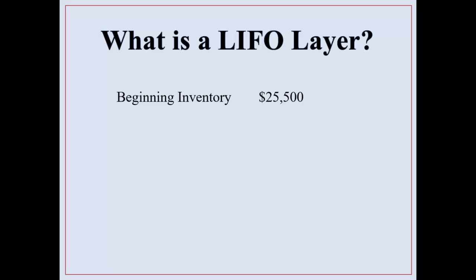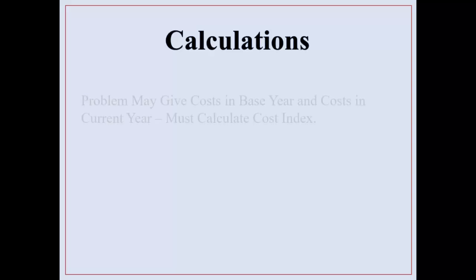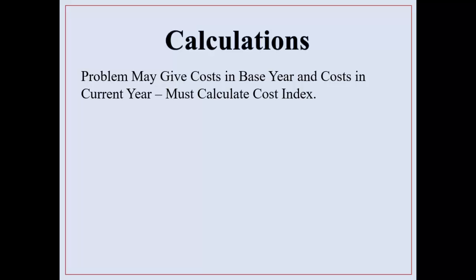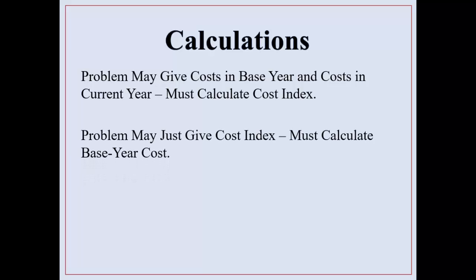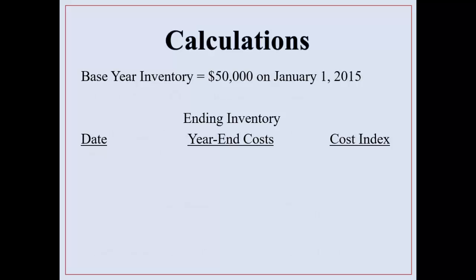So what is a LIFO layer? Beginning inventory, let's say, is $25,500. Ending inventory is $30,000. That means a new layer at new costs was added this year of $4,500 — that's a simple explanation. For your calculations, the problem may give you cost in base year and cost in current year, so you have to calculate the cost index. Or the problem may just give you the cost index, and then you have to calculate what your base year cost was. The cost index equals cost in the layer year divided by the cost in the base year.